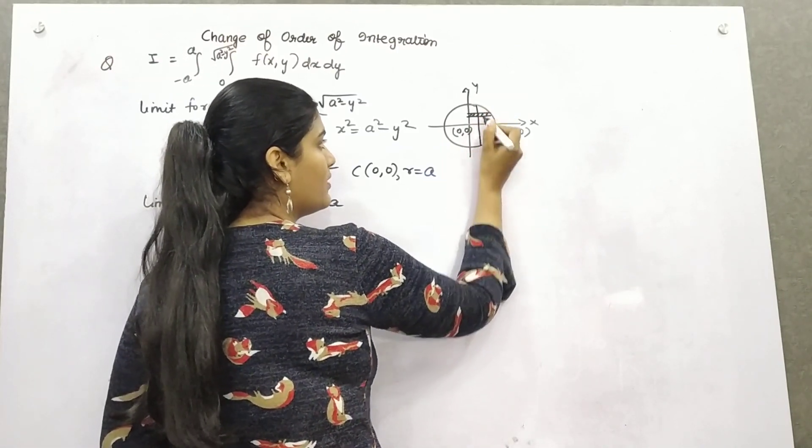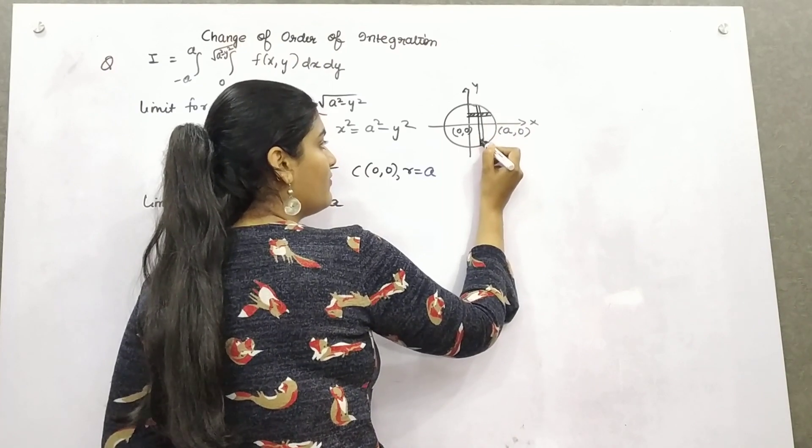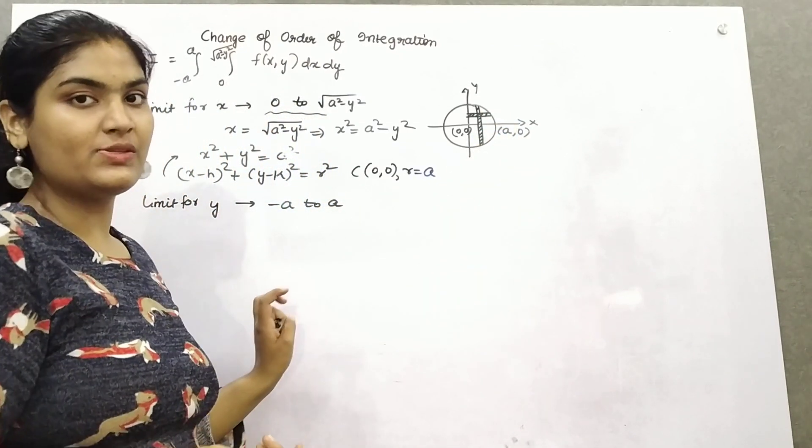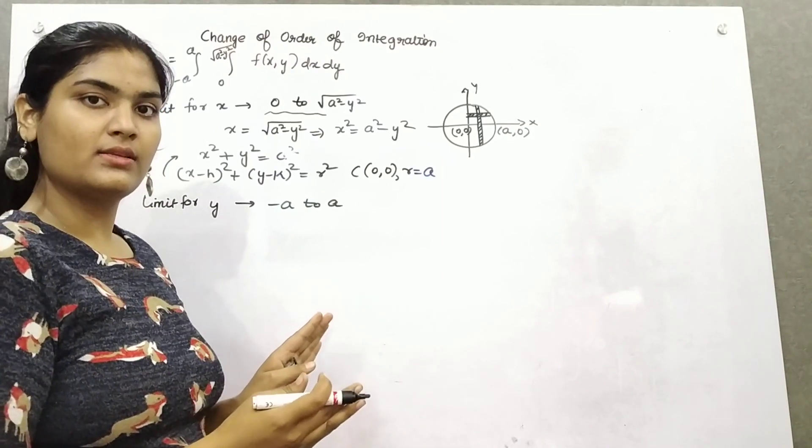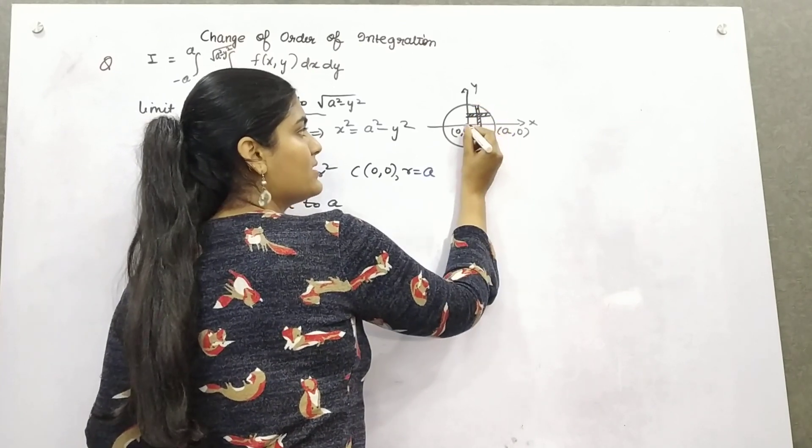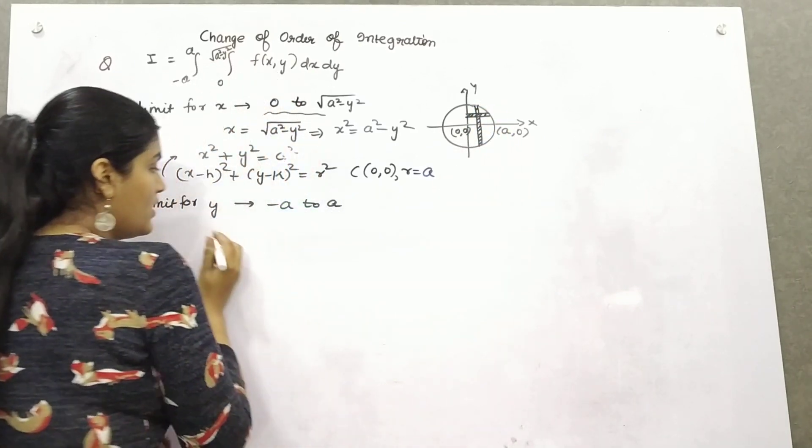Now, because the question is asking us to change the order for integration, take another strip. Because what we have initially is horizontal, now take a vertical strip parallel to the y-axis. So you have to find out the points here.